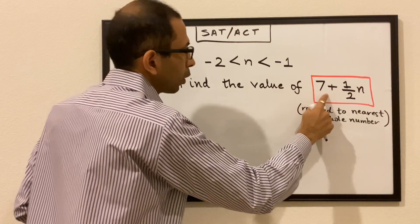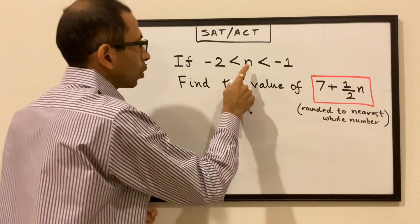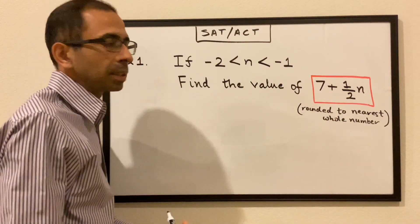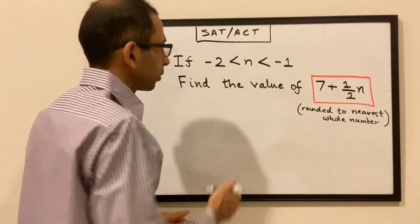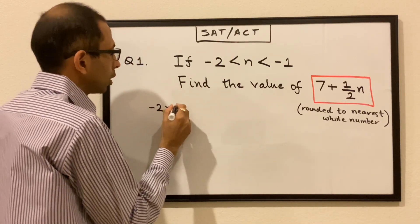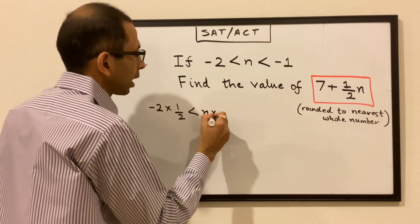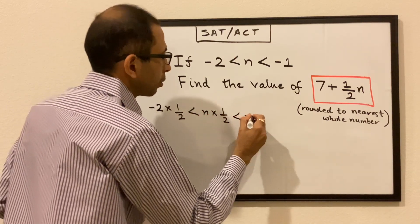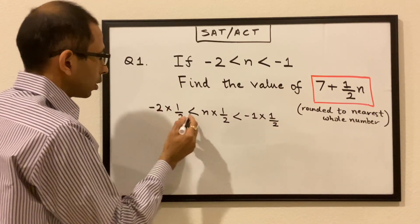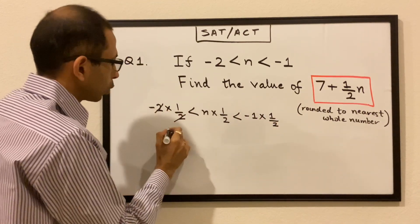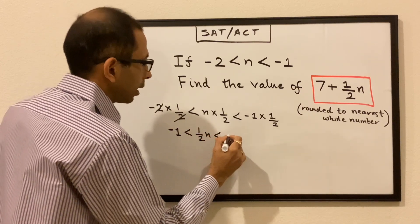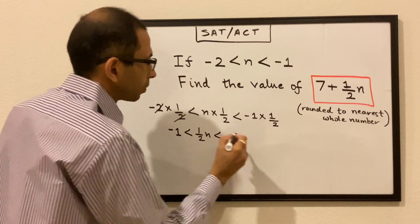We have to find the value of 7 plus half n. The first thing that comes to mind is to multiply this inequality by half. When we do that we get: minus 2 times half is less than n times half is less than minus 1 times half. The 2s cancel, so we get minus 1 less than half n less than minus half.